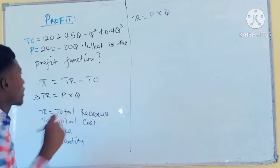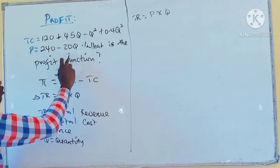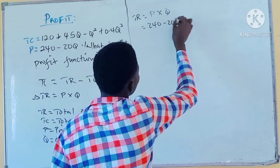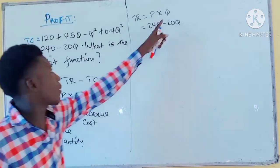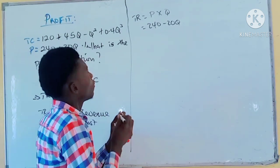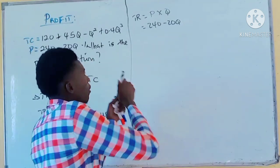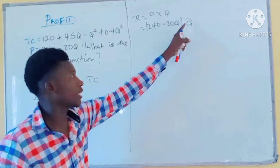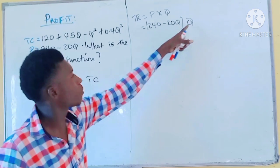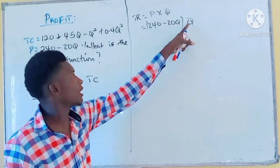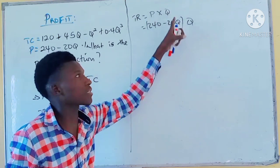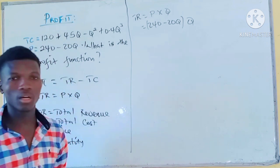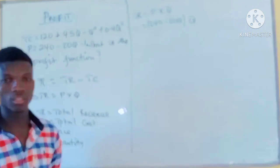From the first step, total revenue equals price times quantity — P times Q. What is P? We know P. P is 240 minus 20Q. So total revenue equals (240 minus 20Q) multiplied by Q. Because Q affects the entire equation, you must put the price expression in brackets. If you don't put it in brackets, Q will only affect the last term, which will not be correct for your equation.